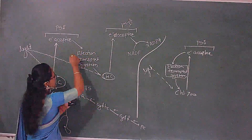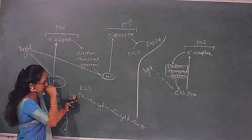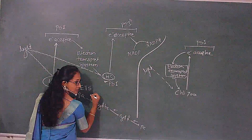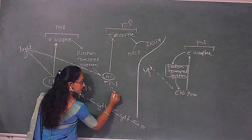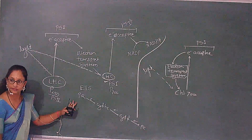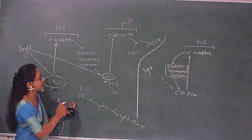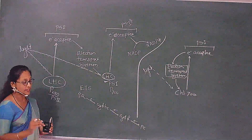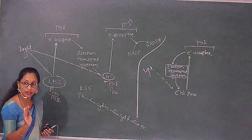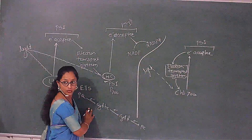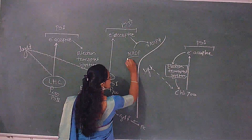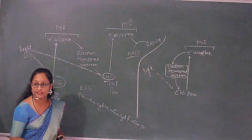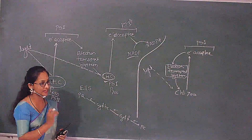So in this case the electron transport system is involved. After this, who will accept the electron? In PS1, P700. Next, electrons emitted from here go to FD through FRS. The last electron acceptor is NADP, which acts as the last electron acceptor as well as proton acceptor.